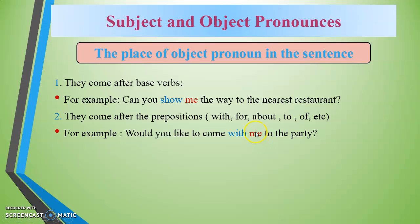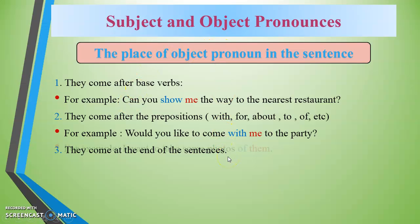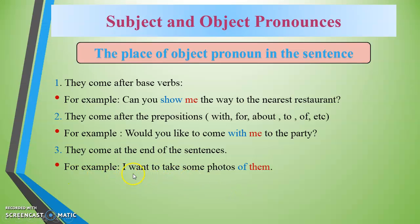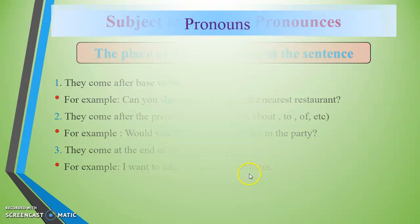Object pronouns can also come at the end of a sentence. For example: 'I want to take some photos of them.' Here 'them' is the object pronoun, placed at the end after the preposition 'of'.